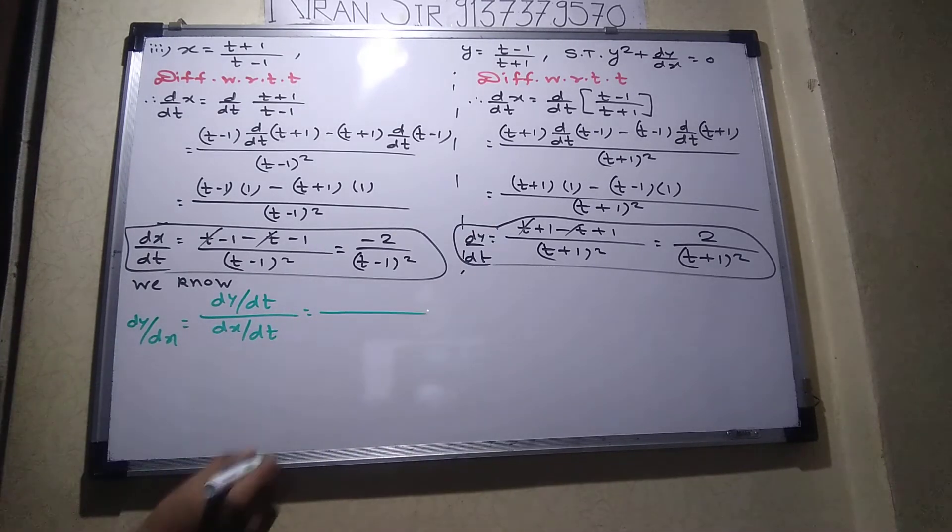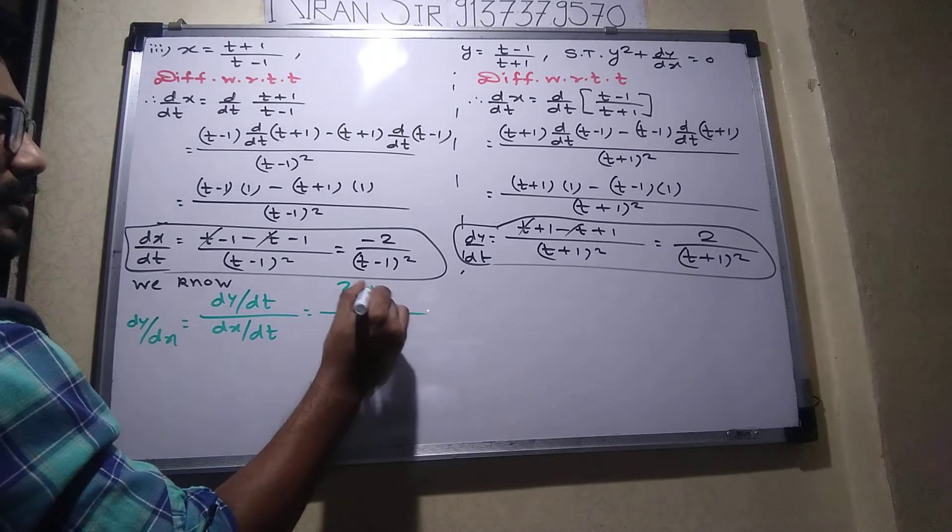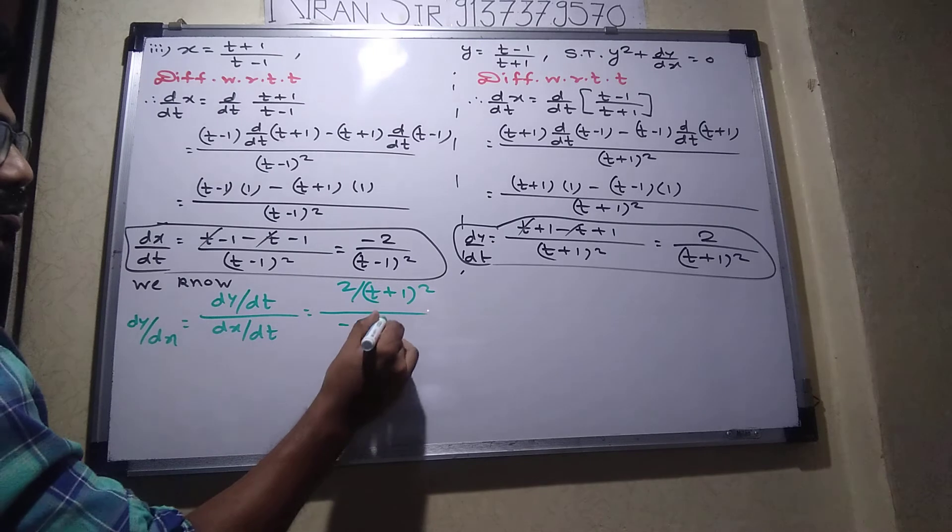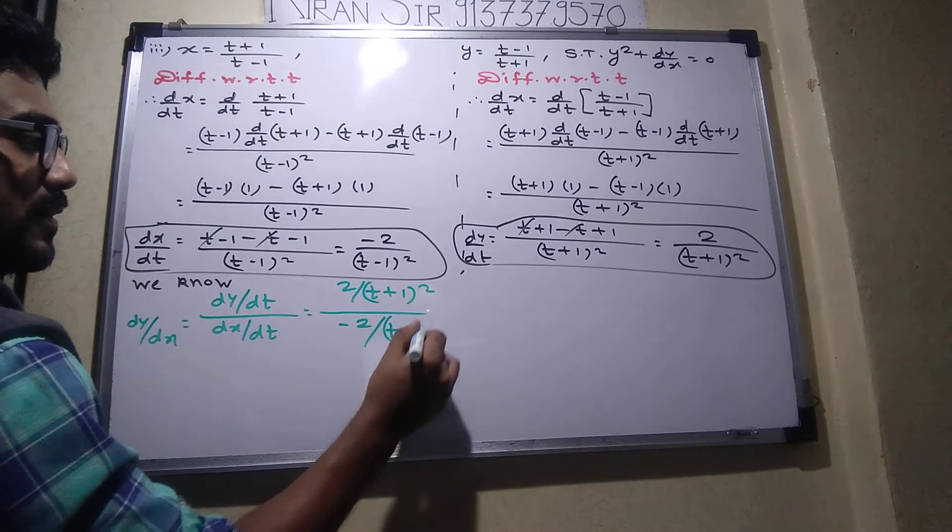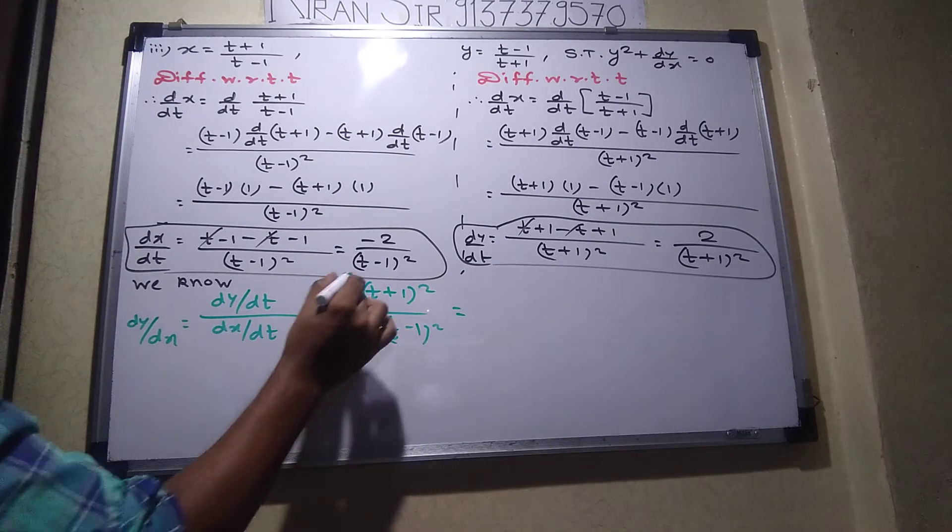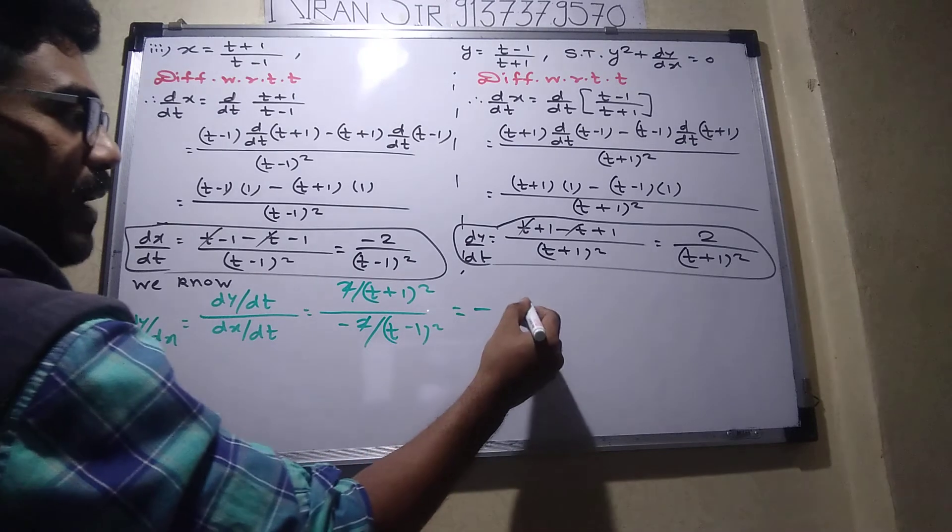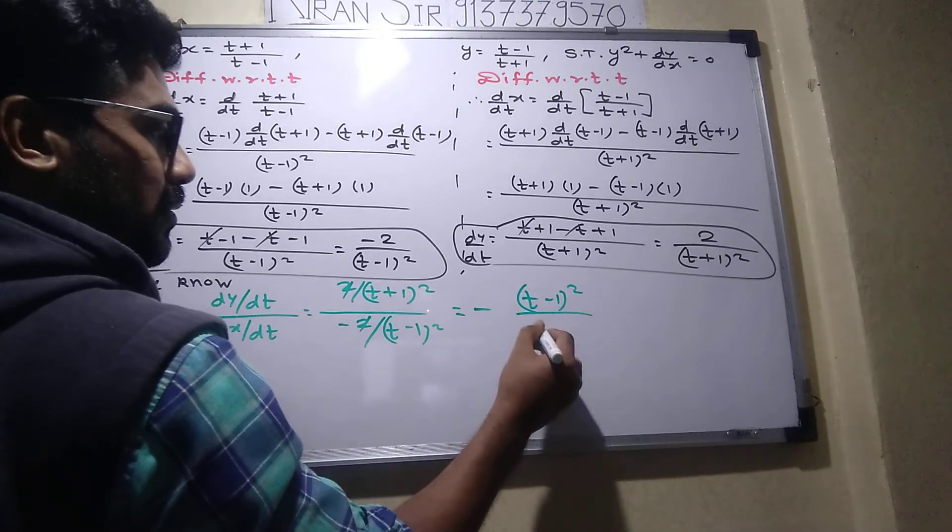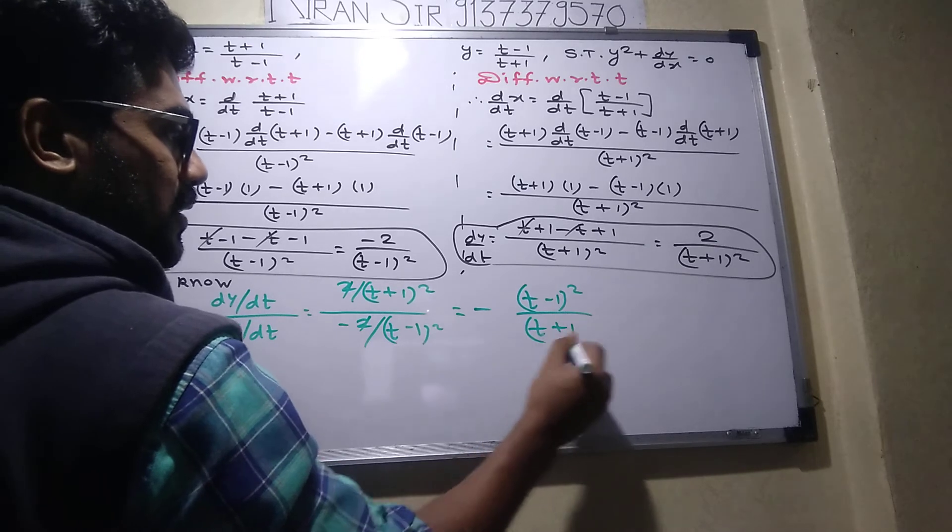What is dy by dt? 2 upon t plus 1 the whole square. And this is minus 2 upon t minus 1 the whole square. 2, 2 cancel. This goes up, so minus. t minus 1 the whole square upon t plus 1 the whole square.